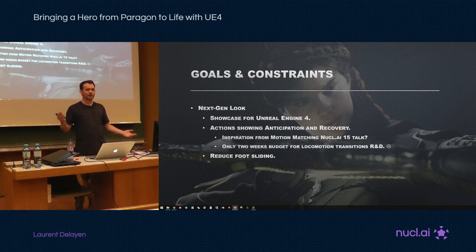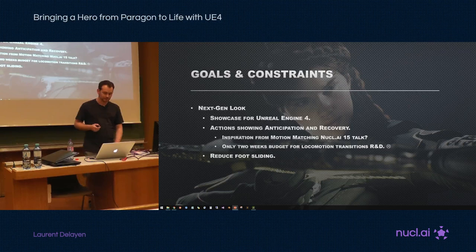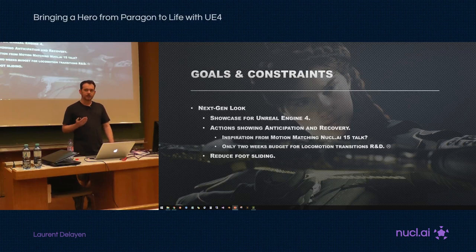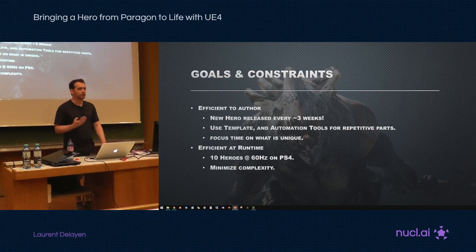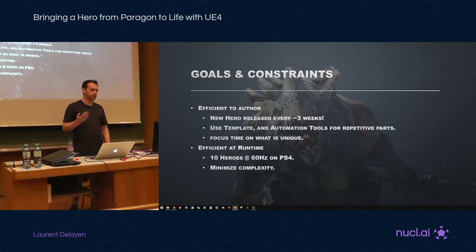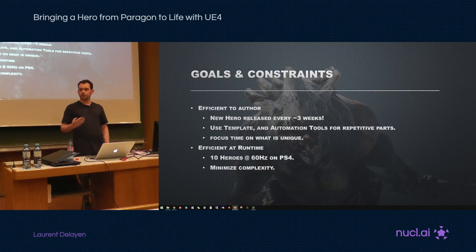Another aspect we wanted to focus on was reducing foot sliding. Typically when you want very smooth animation and very responsive gameplay, something has to be compromised — and it's usually foot sliding. We wanted to see if we could optimize this. After that, we wanted to focus on efficiency — efficiency to author characters, because Paragon is a MOBA and we want a lot of unique heroes. We want to release a completely new hero every three weeks, so we have to be very good and very fast. We needed to build a template and automation tools to speed up the repetitive parts so we could focus our time and energy on what is unique.